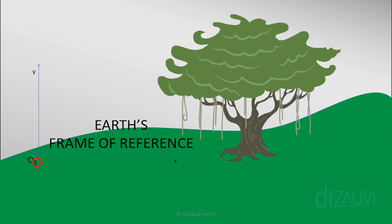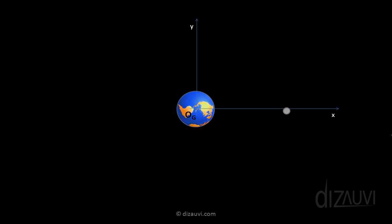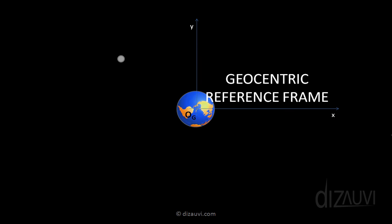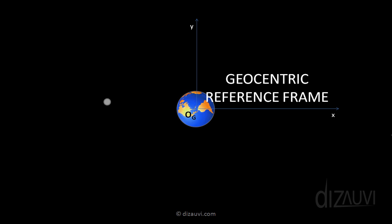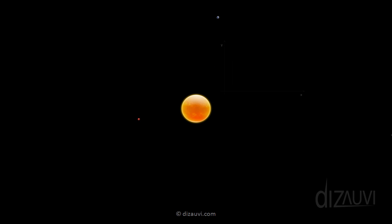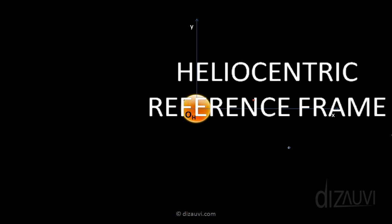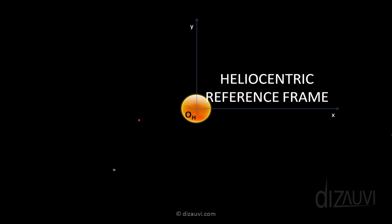When we study the motion of bodies that revolve around the Earth, like the moon or satellites, it is easier to fix the reference frame at the center of the Earth — this is called the geocentric frame of reference, where 'geo' means Earth and 'centric' means at the center. Similarly, when we study the motion of planets around the sun, as in gravitation, we use the heliocentric frame of reference — 'helios' means sun, so heliocentric means measured from the center of the sun.